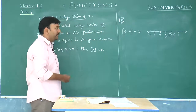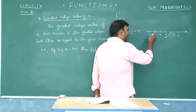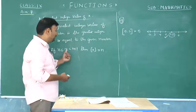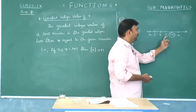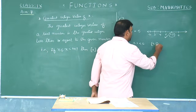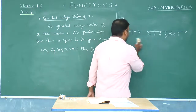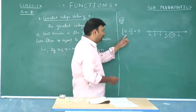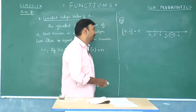The greatest integral value of a real number is the greatest integer among all integers less than the given number. Since 5.3 lies between 5 and 6, the greatest integral value of 5.3 is 5. A simple tip: mark the number on the number line and identify the integer that is exactly to the left of that number — that gives you the greatest integral value.